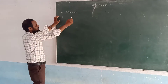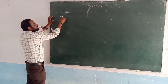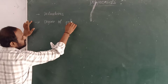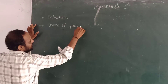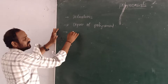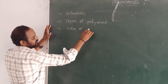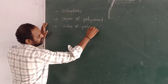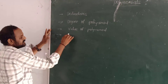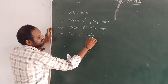The second concept is degrees of polynomial, the third concept is value of polynomial, and the fourth concept is zeros of a polynomial.